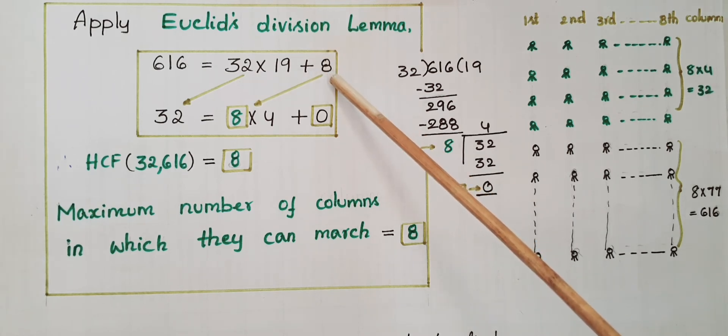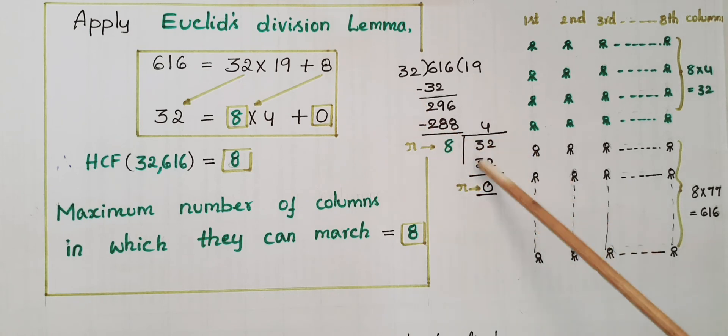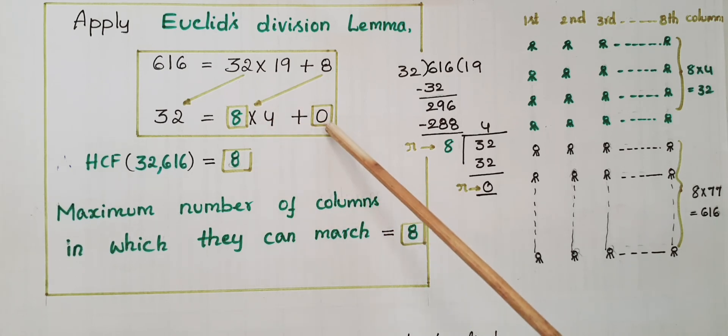Here the remainder is not equal to 0, again divide this 32 with 8. So 8 fours are 32, then the remainder is 0. So 32 is equal to 8 into 4 plus 0. Here the remainder is 0.